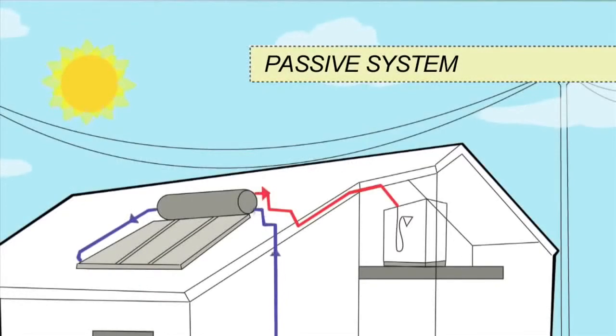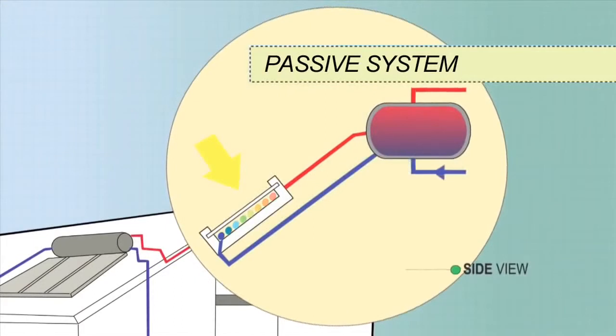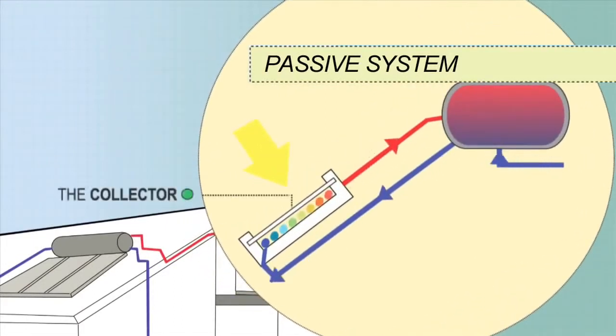In passive systems, also known as thermosiphon systems, the tank sits above the collectors. Cold water sinks into the collectors whilst warmer water rises unassisted from the collectors into the tank.